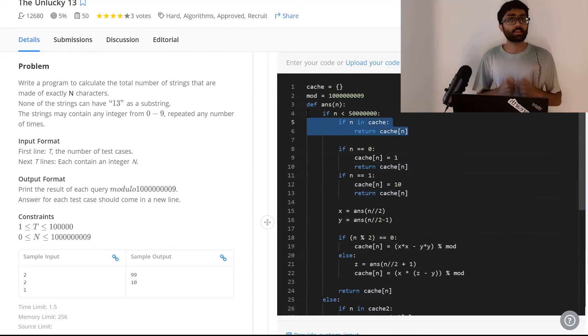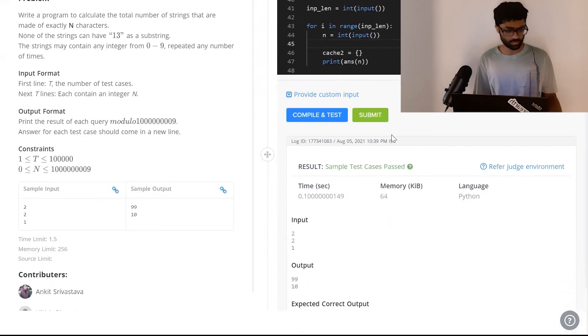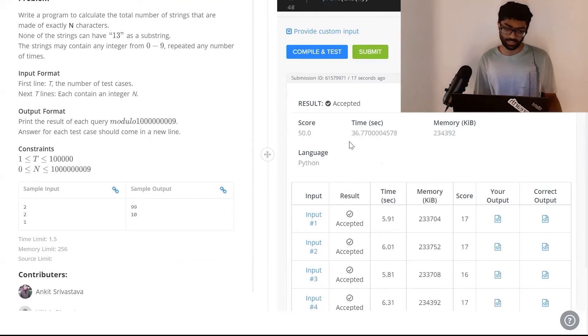Finally, if n is in the cache—meaning we've already calculated the value—just return the cached value. The cache is a hash map, essentially a dictionary, so we can return it in O(1) time with no computation required. Let's see if our code works. Once we hit compile and test, our samples have been passed, and once we hit submit, it has been accepted for each and every single test case.